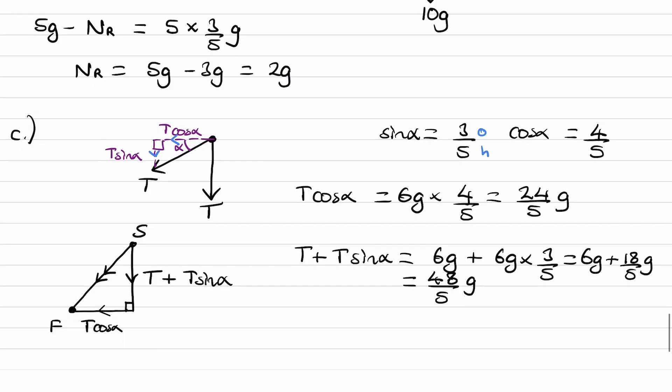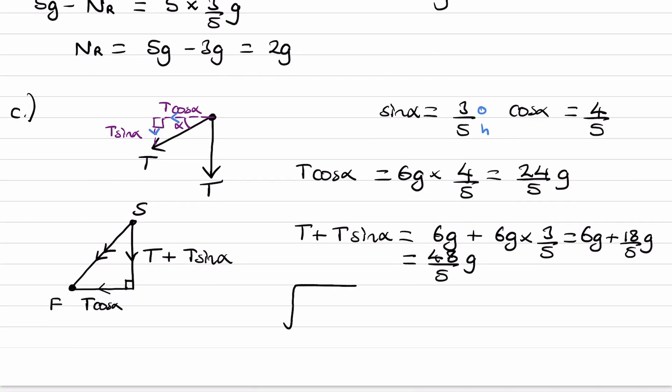Now we can use Pythagoras, so the square root of 24 over 5 G squared plus 48 over 5 G squared. Add them up, square root the result and this gives us 105.2 newtons, which is our final answer.